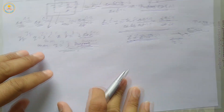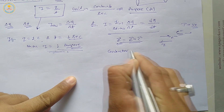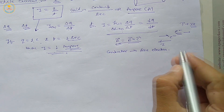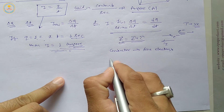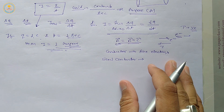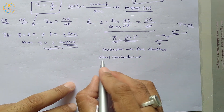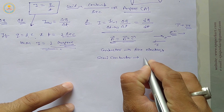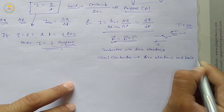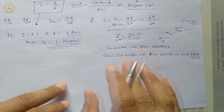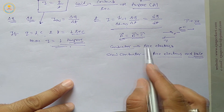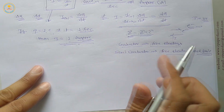Current flows in a conductor due to free electrons. In a semiconductor, current flows due to free electrons and holes. A hole is the absence of an electron. So in a semiconductor, electric current flows due to free electrons and holes, while in a conductor it is due to free electrons only.